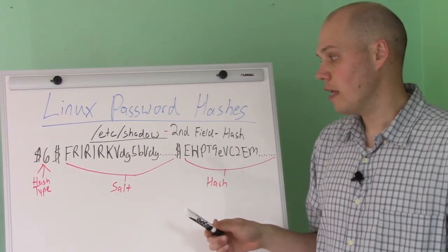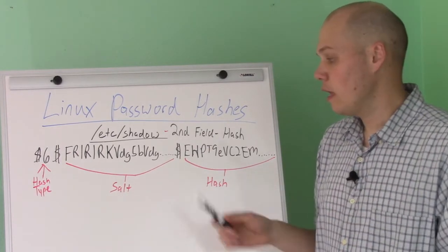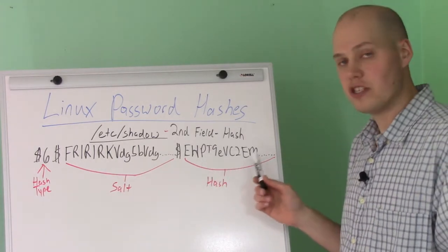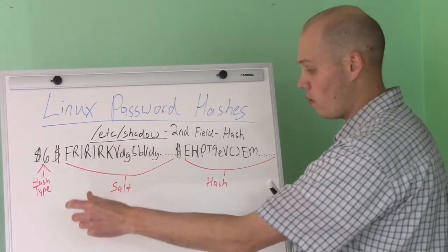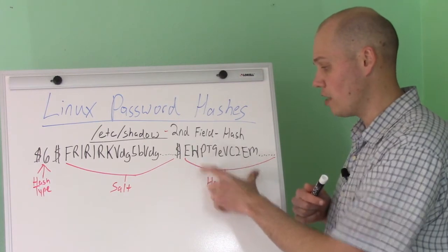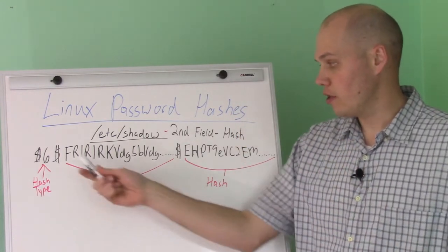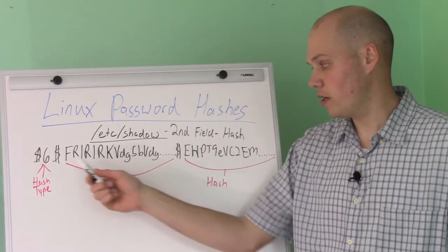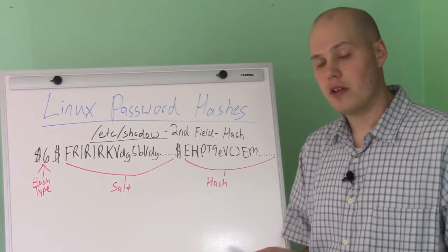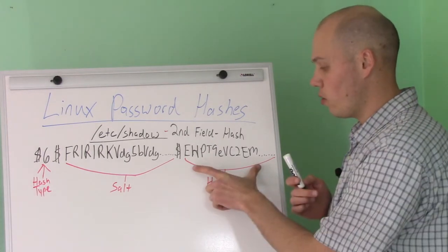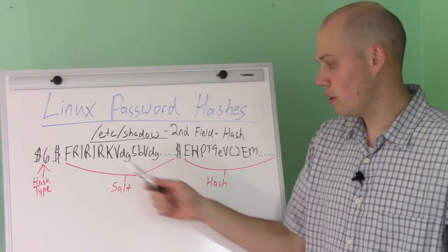The other thing the salt helps prevent: let's say there was no salt in use and you had two users who had the same password. Without a salt, the hash in /etc/shadow would look identical for those two users, because it would take their password, run it through the hash function, and produce the same hash. But if you have a salt in place, the salt is always randomly generated at the time the password is hashed when they initially set it. So two users with the exact same password will show up differently in /etc/shadow, because the different salts are combined with their passwords.